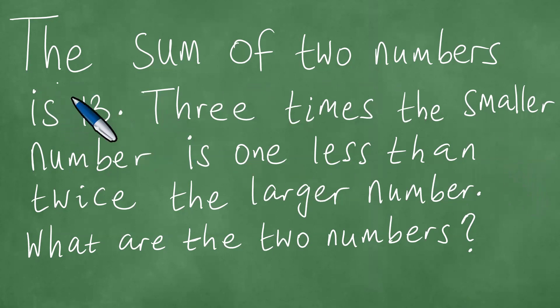We have here this particular word problem and it reads as follows. The sum of two numbers is 13. Three times the smaller number is one less than twice the larger number. What are the two numbers?